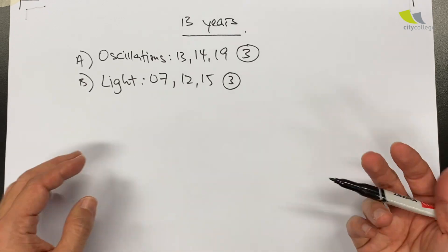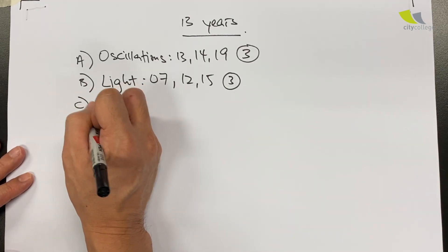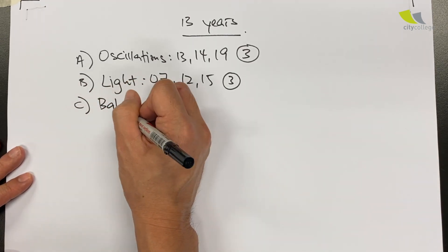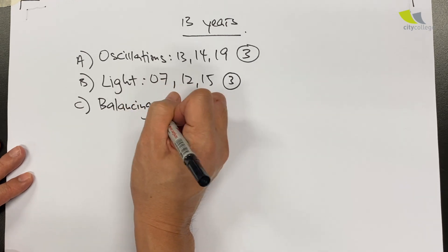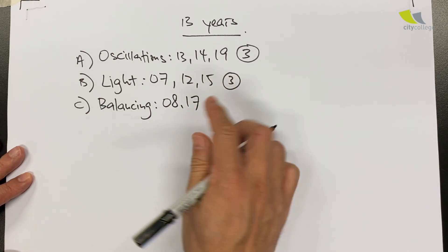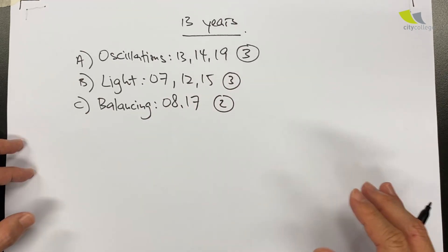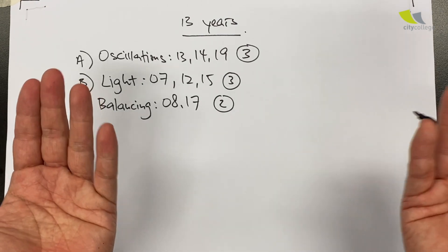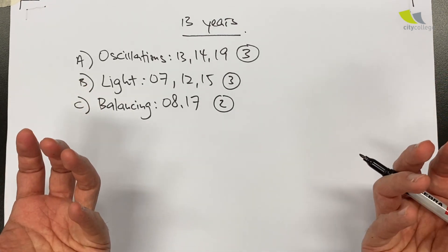Next group are experiments that got to do with balancing, and this is actually your turning forces. 2008, 2017, so it came up two times. It's either to find the mass of an object through principle of moments or to find center of gravity.